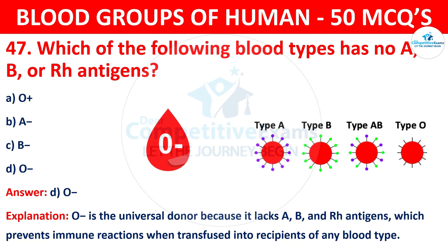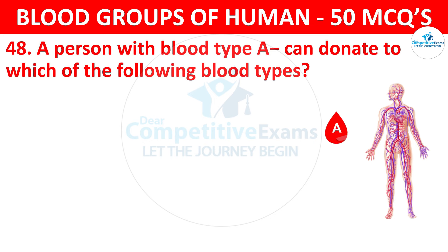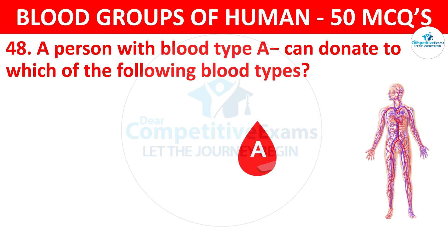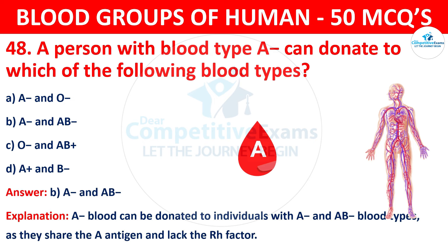Question 48: A person with blood type A negative can donate to which of the following blood types? The correct answer is B, A negative and AB negative. A negative blood can be donated to individuals with A negative and AB negative blood types as they share the A antigen and lack the RH factor.